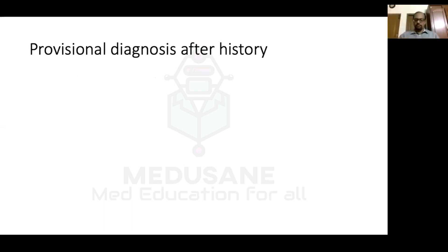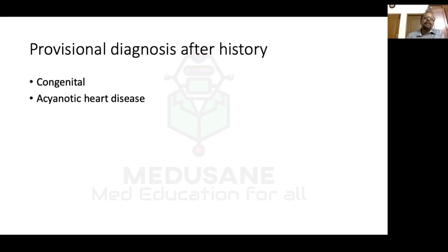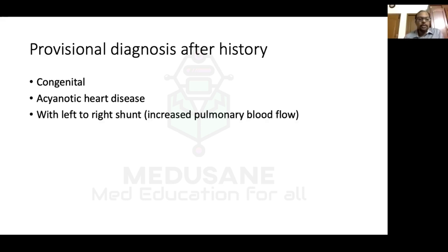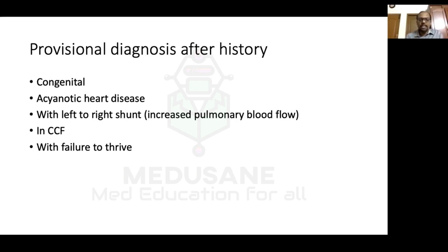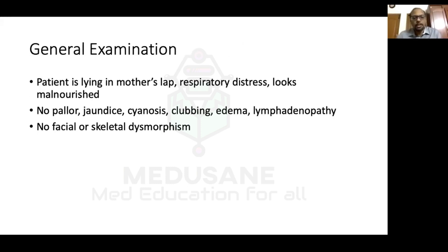Coming to the provisional diagnosis from history: symptoms present from the first month of life indicate congenital heart disease. No cyanosis, but history of respiratory tract infections, failure to thrive, and suck-rest-suck cycle indicate an acyanotic congenital heart disease with increased pulmonary blood flow — a left-to-right shunt with congestive heart failure and failure to thrive. From history alone we can say it is a congenital acyanotic heart disease with left-to-right shunt in congestive heart failure with failure to thrive. The exact type of lesion will be determined by examination.